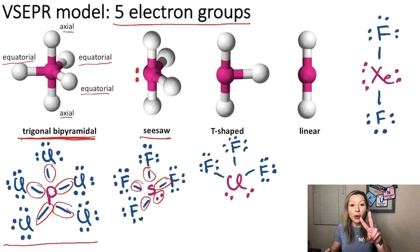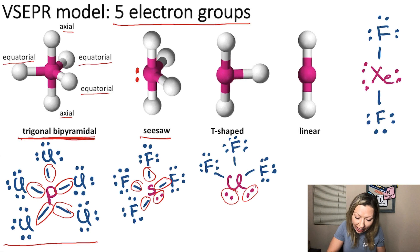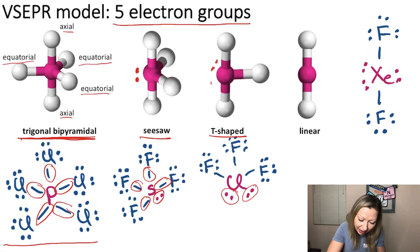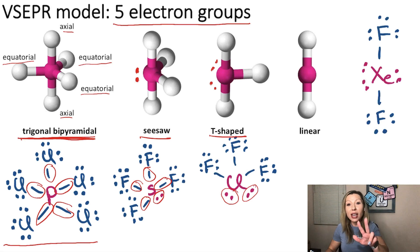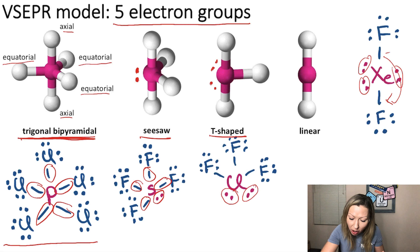When we remove two of the atoms and replace them with lone electron pairs, just like in chlorine trifluoride, we are going to get the T-shaped structure. And when we remove three of the atoms to replace them with lone electron pairs, just like in xenon difluoride, we are going to see a linear structure with a bond angle of 180 degrees.